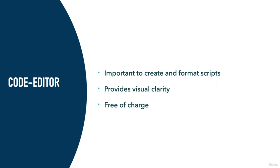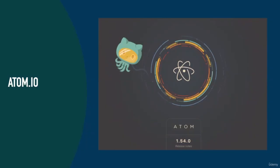Another thing you should install at the beginning is a code editor. It is important to have an editor because you can create and format scripts very easily, and it provides visual clarity because the code is highlighted and colored in different ways so you can easily see functions and other parts of the code. It is free of charge. The code editor I will use is Atom. Atom is developed by GitHub, which is a service for versioning development. Atom is very easy to use and we will install it now.